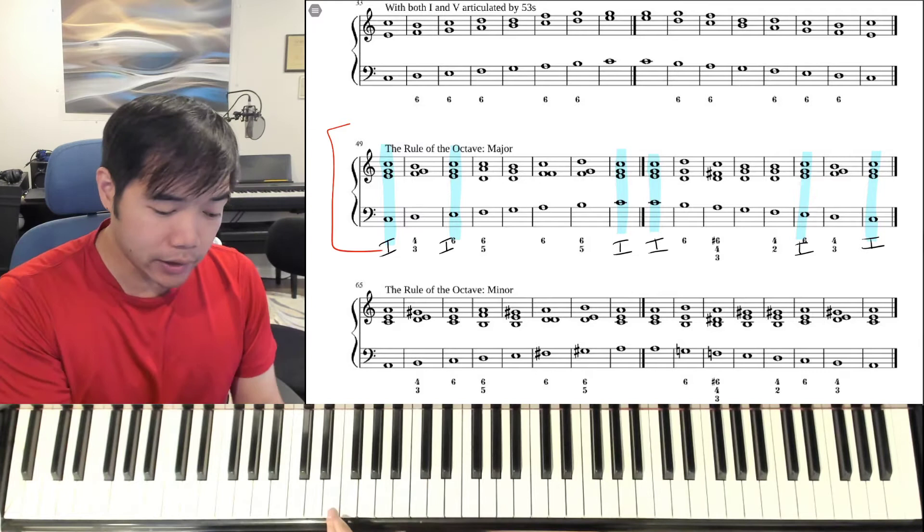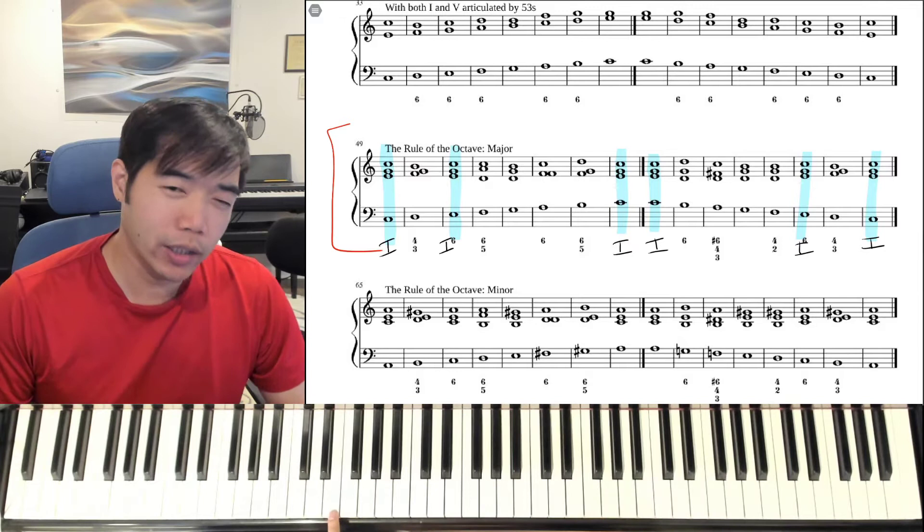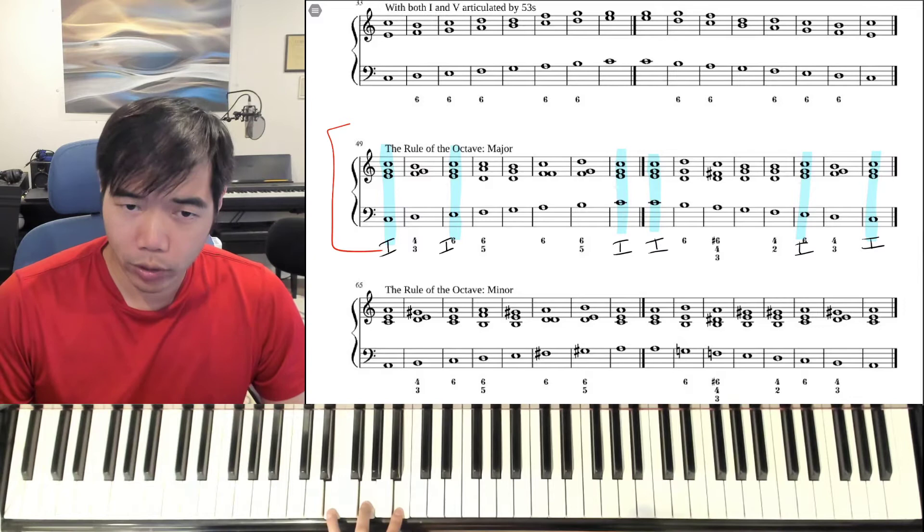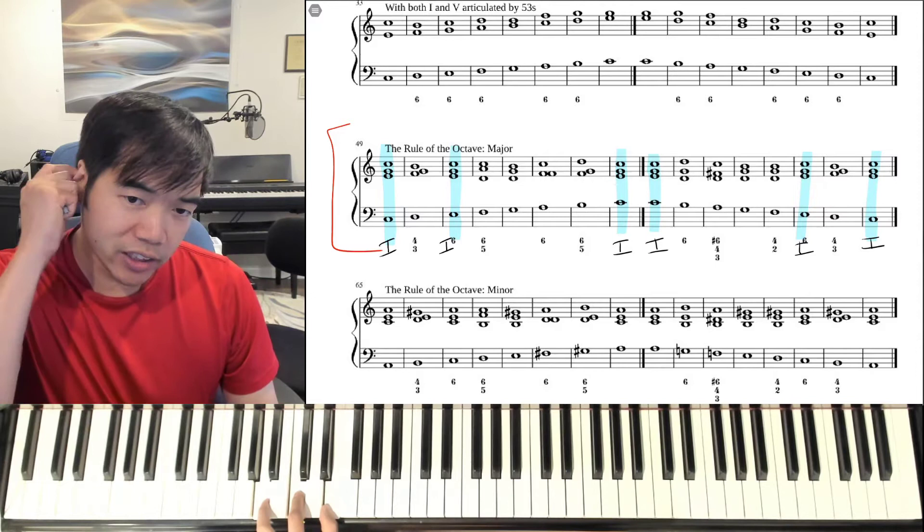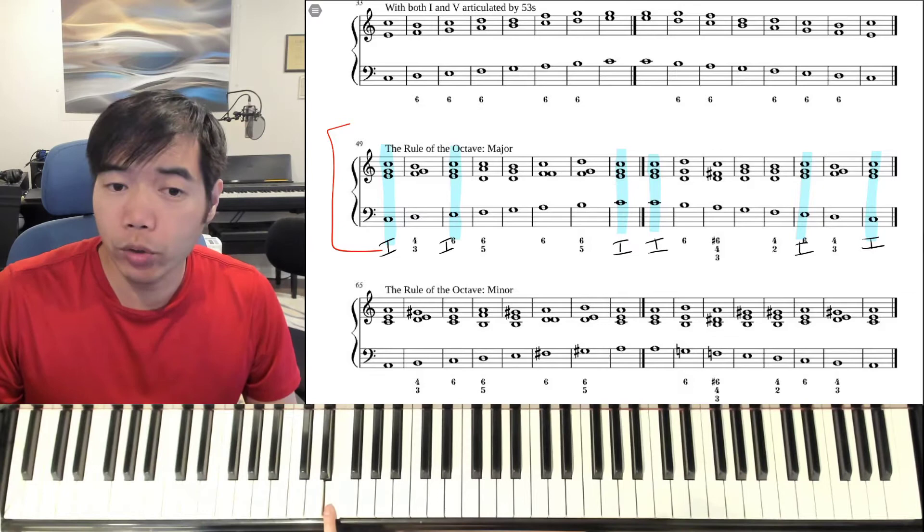Of the chords in C major that contain an E, you really only have three possibilities when it deals with triads. It can be an E minor chord, which is a three chord, a mediant chord. It could be the one chord. And it could be the sixth chord, the submediant chord. Those are your three possibilities.